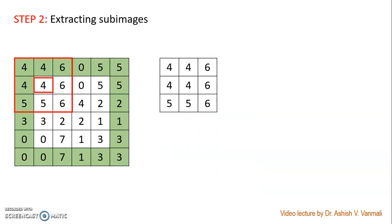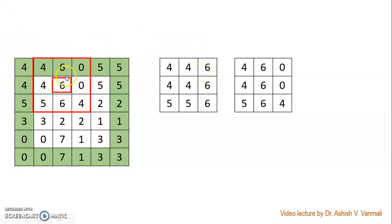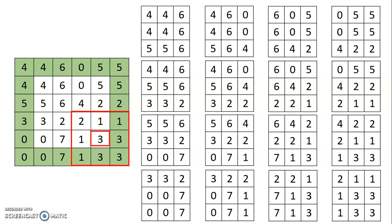In the next step, we need to identify or extract the sub-images. Whenever we do spatial linear filtering, we always ensure that we keep the center of the mask inside the original image only. This ensures that my input image size and output image size are the same. When we keep the center at the first pixel of my original image, this is the underneath sub-image. Then I move the center to the next pixel and get the next sub-image. There are 16 pixels in the image, so we will get 16 different sub-images.